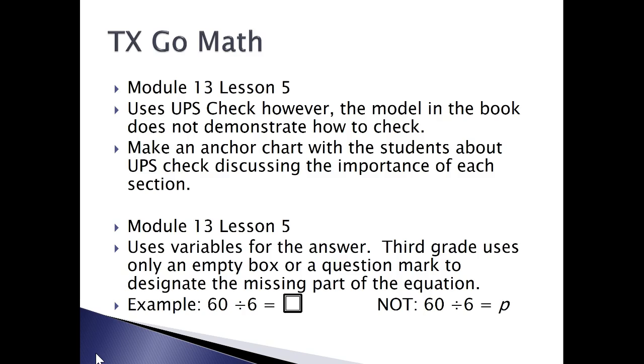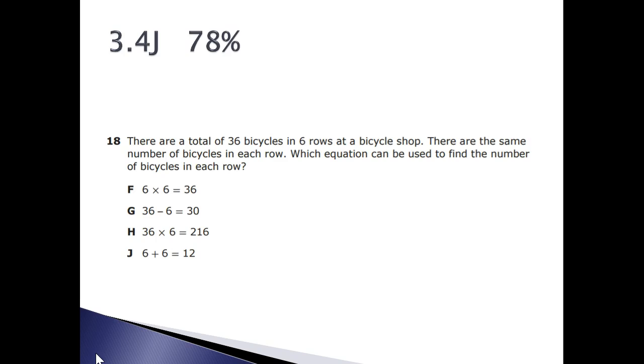Now, Module thirteen, Lesson five, does use UPS Check. However, it doesn't really demonstrate how to check. Remember that when we are working with UPS Check, we don't have to check with the inverse operation. What we're doing is we make sure that we did find what we said we needed to find and understand, and then we did follow our plan that we chose in the plan section, the strategy that we chose. When we want to check our problem, we could use a different strategy if we'd like. Also, notice in Module thirteen, Lesson five, it uses variables for the answer, but third graders are tested only with an empty box, not with a variable. So, make sure that they're exposed to having an empty box for their possibility of an answer choice.